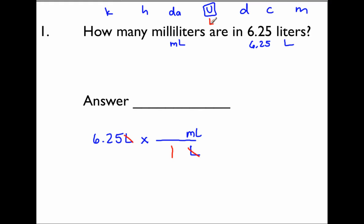Now I'm going to count over to get to the M. When I count every space I move, I'm going to multiply by a power of 10. So going from L to M: 10, 100, 1,000. So there are 1,000 milliliters to 1 liter. You've been given 1 liter equals 1,000 milliliters — that's how they got that fact.